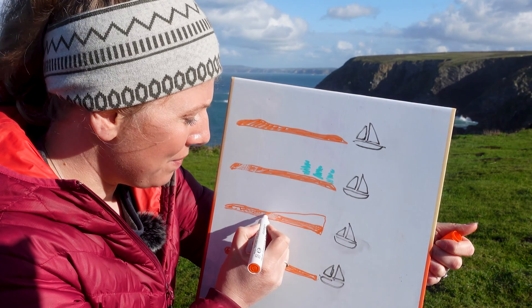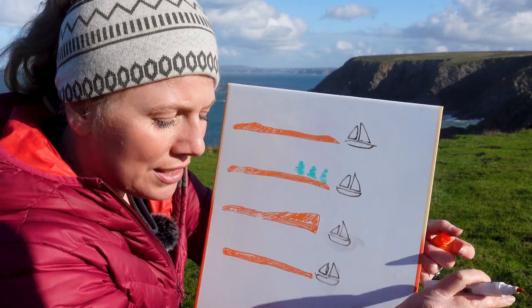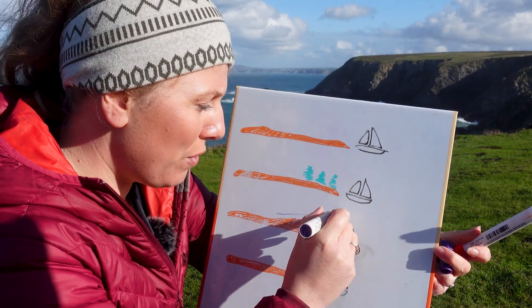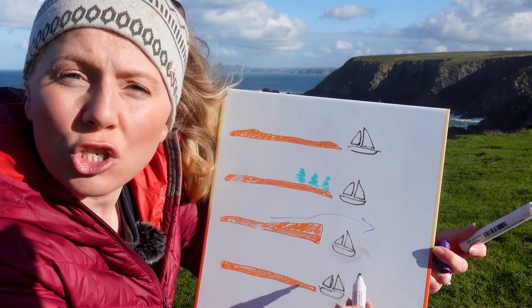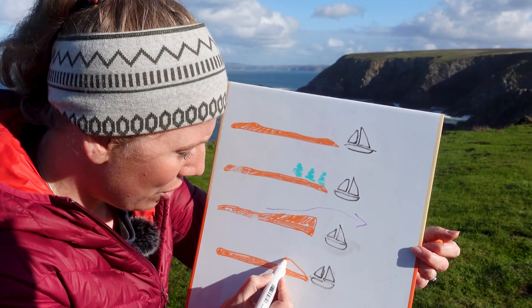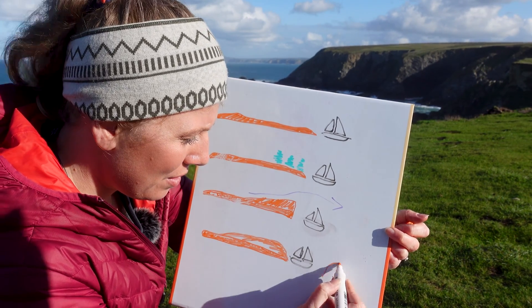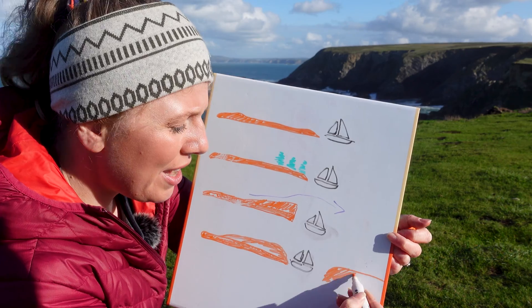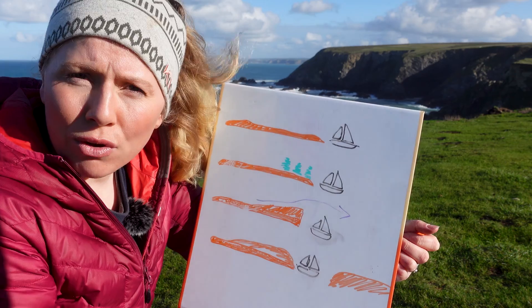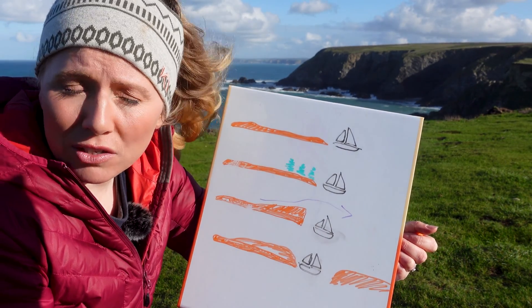Then we've got cliffs. If you can get close in to some big cliffs, what you'll find is the wind will get directed over the top of the cliffs and there could be some good sheltered water close in underneath. And then we've got valleys. Wind can get funneled by valleys and can actually be stronger where it gets drawn through a valley, so rather than shelter you might actually find increased wind because of a valley.